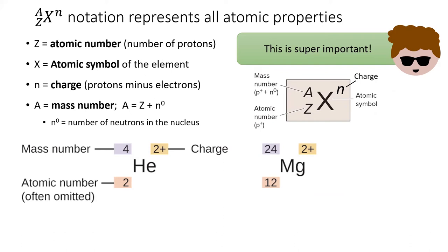The letter Z signifies the atomic number, which is how many protons the atom has. The number of protons is unique to the identity of the element. Helium always has two protons. Magnesium always has 12.